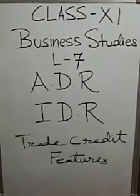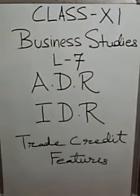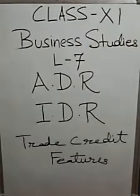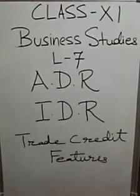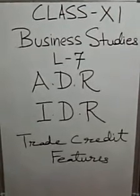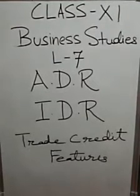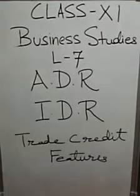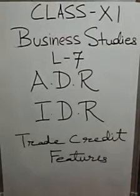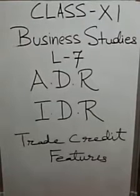Trade credit refers to an arrangement whereby a manufacturer is granted credit from the supplier of raw material, inputs, and spare parts. The supplier allows their customer to pay their outstanding balance within the credit period. Generally, the duration of credit, or mercantile credit, is 3 to 6 months, and thus it is a short-term financing facility. The availability of trade credit depends upon the nature, size, and status of the firm.